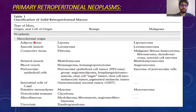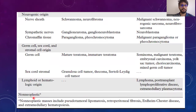From mesodermal origin, tumors can arise from adipose tissue, smooth muscle, connective tissue, striated muscles, blood vessels, perivascular epithelioid cells, interstitial cells of Cajal, embryonic mesenchymal tissue, or miscellaneous sources. From neurogenic origin, they can arise from nerve sheath, sympathetic nerves, or chromaffin tissue. From germ cell and sex cord origin, they can arise from germ cells and gonadostromal tumors.